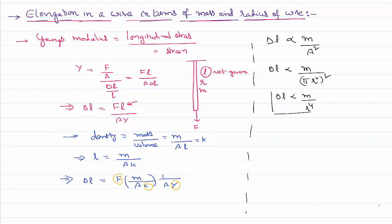of radius same, obviously being the length is different, mass different, in that case I can write delta l directly proportional to m itself. That means a heavy wire expands more and a light wire expands less, provided there is no information given regarding the length.